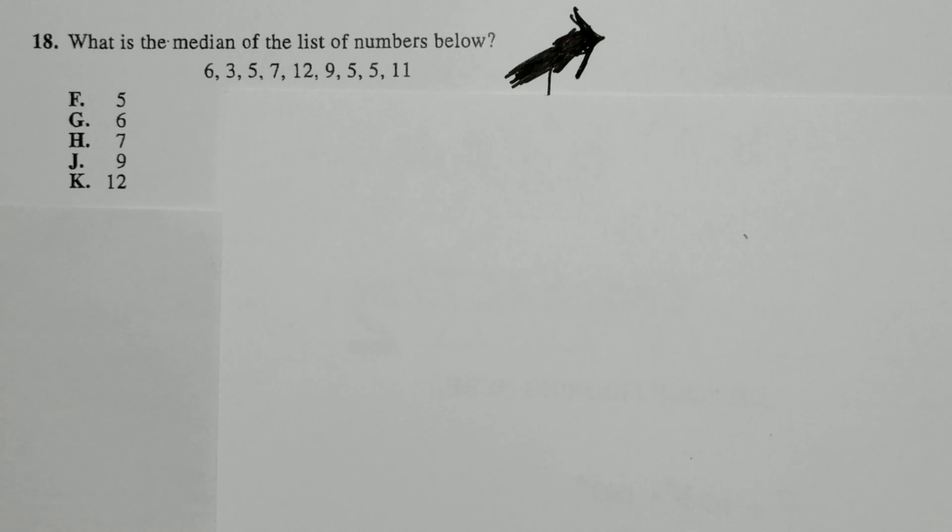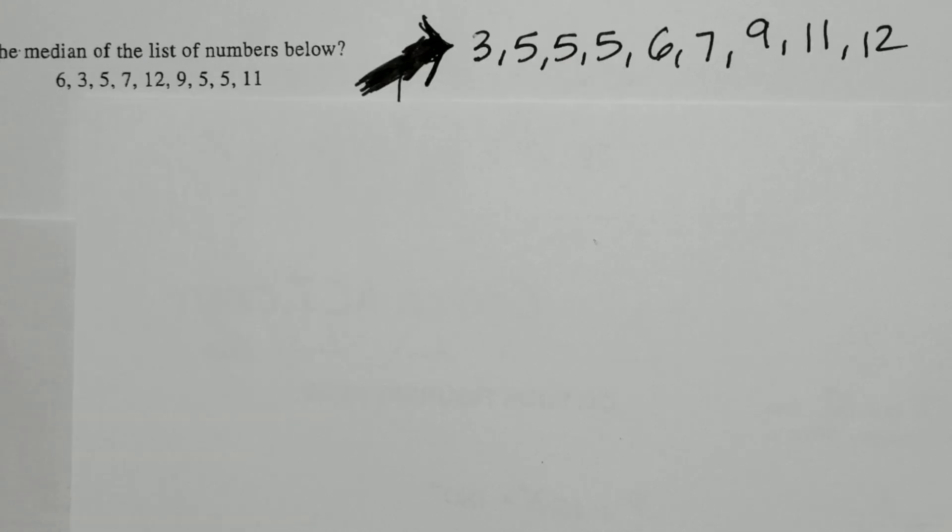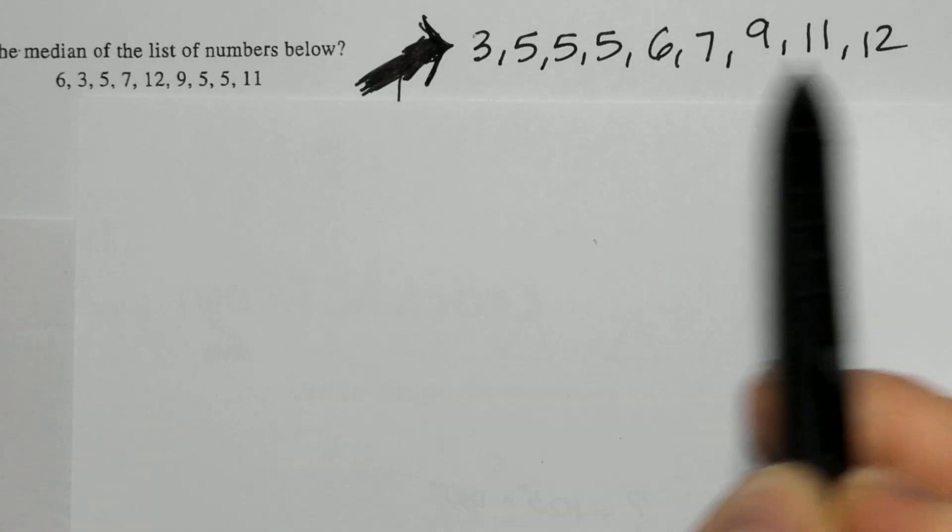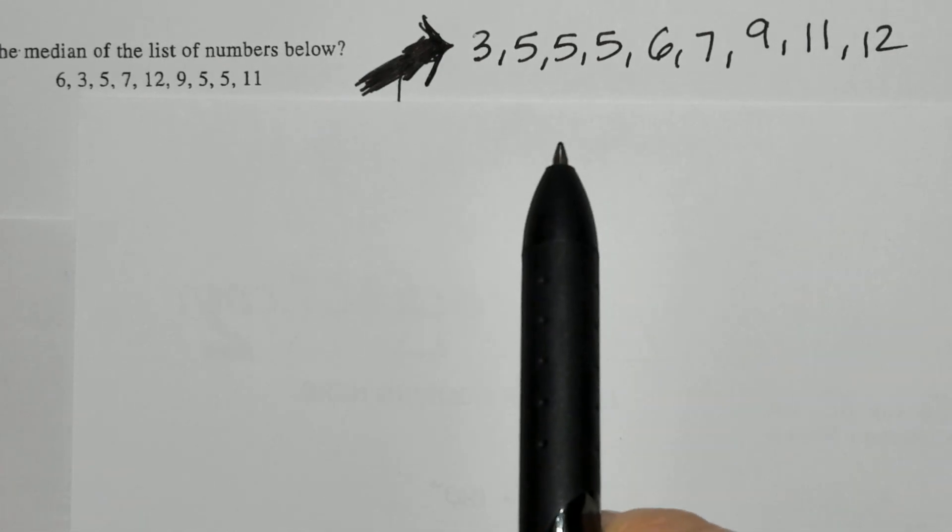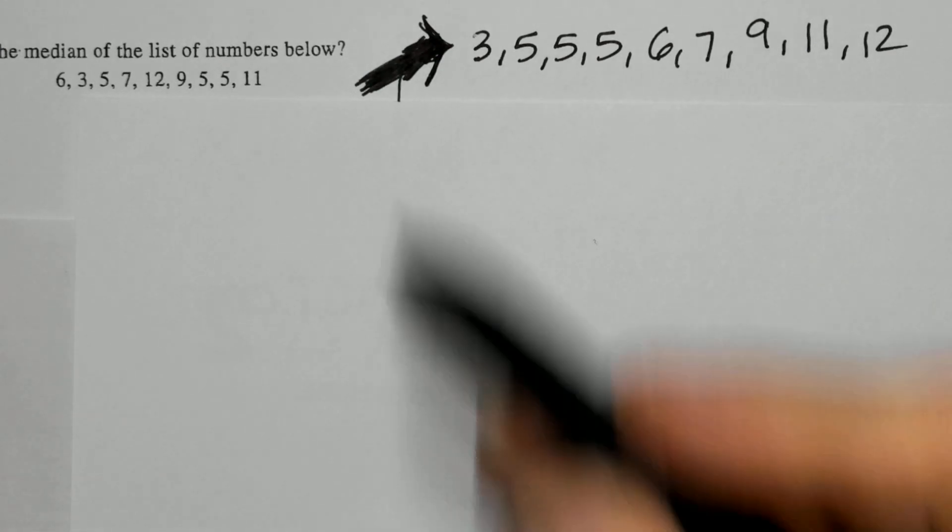Now, before we can identify that number, we need to list these numbers in order, and I'm going to do it from least to greatest. So I've placed them in order from least to greatest, I know there's nine items, an odd number. That means only one number will exist that's in the middle. How do I achieve that?